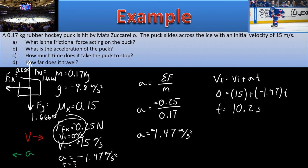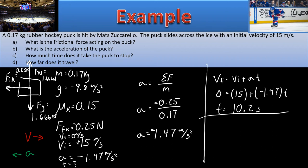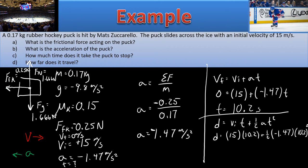Now we know VF, VI, A, and T, so we can calculate the displacement the puck travels. It's going to go pretty far in 10 seconds — maybe it's on a big frozen lake. Substituting in the numbers, you end up getting a displacement of 76.5 meters before the puck comes to a stop.